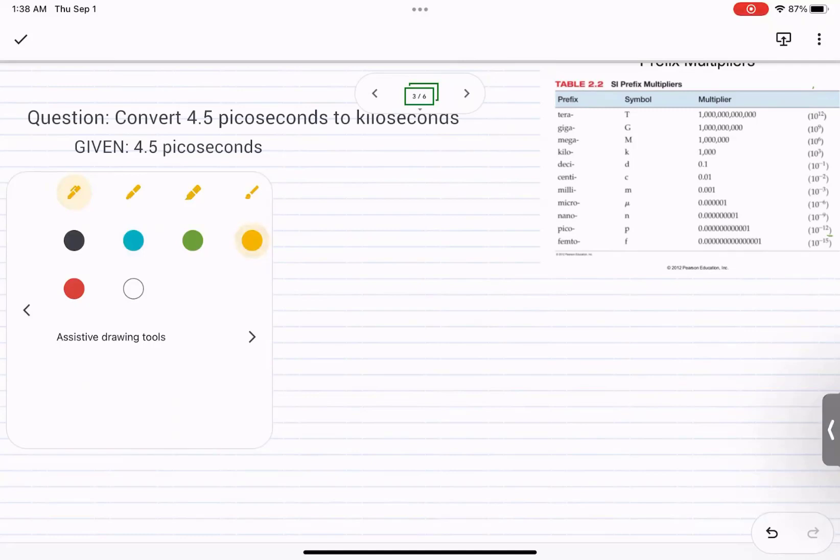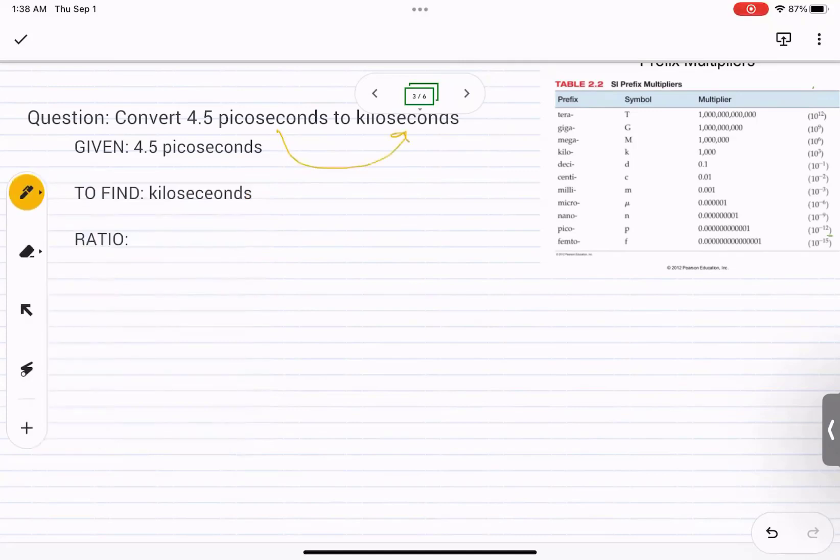So we have to actually go ahead and find a way to go from picoseconds to kiloseconds. So how can we do that? Go ahead and look at the ratios.